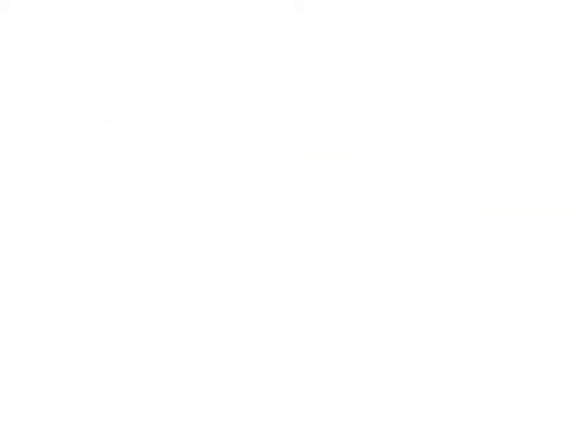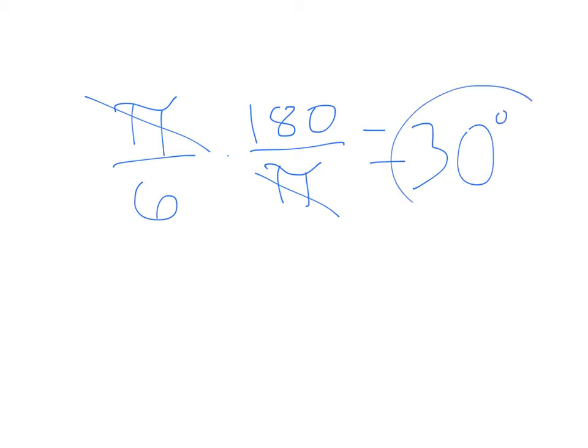One more, how about? Say we have pi over 6. So I'm going to multiply that by, and of course, pause it and try these problems, remember. Pause and try as you need to. I'm just going to keep on rattling through. 180 over pi. Oh, what happens? Cancel, cancel. 180 divided by 6 is going to give me 30. So 30 degrees.